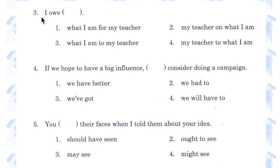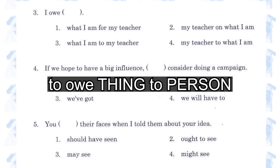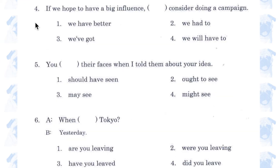Number 3. 'I owe what I am for my teacher / my teacher on what I am / what I am to my teacher / my teacher to what I am.' Number 3. The verb 'to owe' takes the form 'to owe something to someone'. Therefore, the answer is number 3.